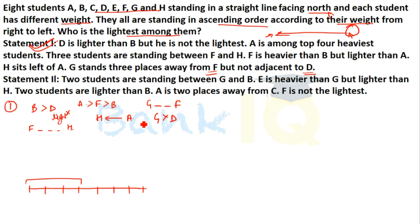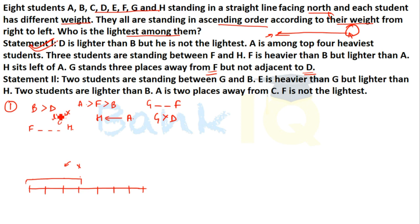If we try to make this arrangement work — placing F and checking whether D is not in the back of A — we can try different configurations, but we cannot determine the lightest person from Statement 1 alone.